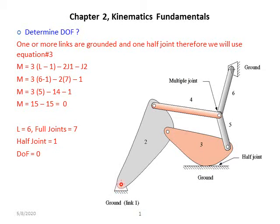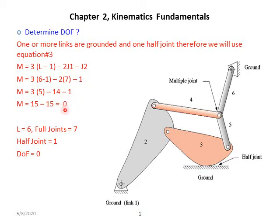So: joint one, two, three, four, five, six, and seven — seven full joints, so j1 = 7. j2 represents half joints; in this case there is only one half joint, so j2 = 1. Doing the mathematics, the mobility or degree of freedom equals zero. This means this mechanism will not move at all.